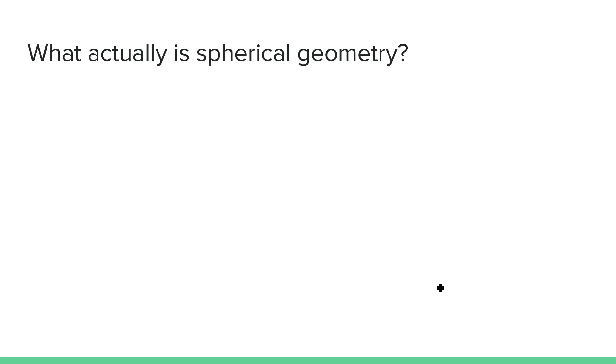So what actually is spherical geometry? Spherical geometry is just two-dimensional geometry that takes place on the surface of a sphere, and is one example of non-Euclidean geometry.